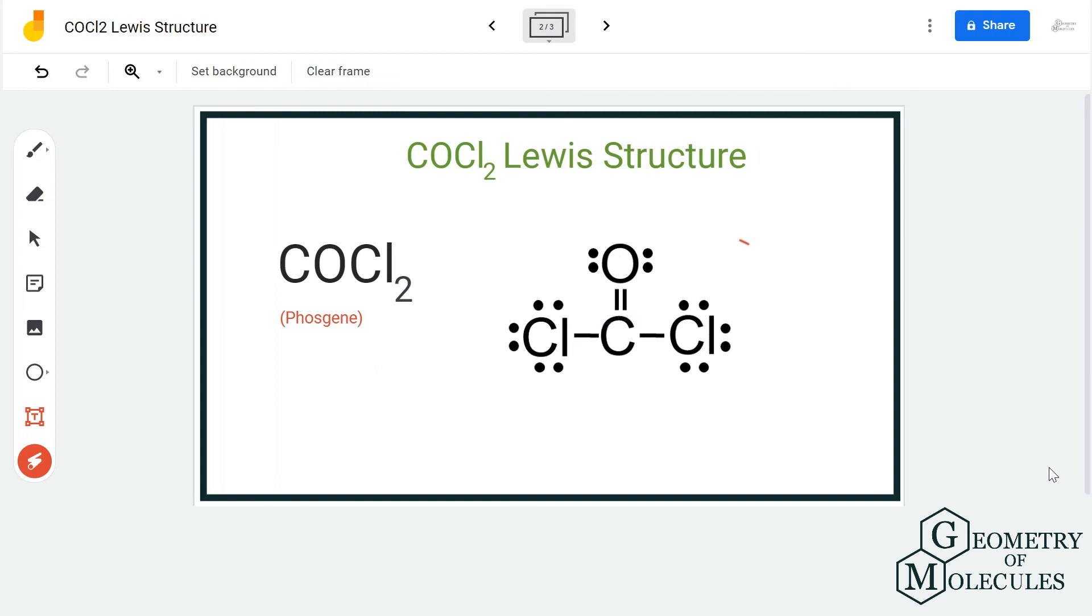And hence, this is the Lewis structure for COCl2, in which all the atoms have complete octets. There is a double bond between carbon and oxygen atom and a single bond between carbon and chlorine atom. I hope this video helps you.